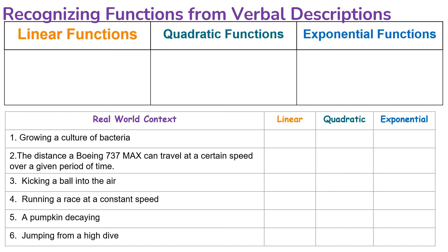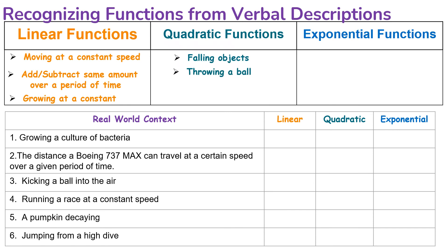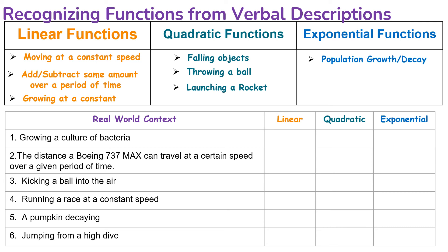Now let's look at recognizing functions from verbal descriptions or real-life situations. A linear function applies when something moves at a constant speed, when you're adding or subtracting the same amount over time, or growing at a constant rate. Quadratic functions arise with falling objects, throwing a ball (which arcs up then falls in a parabola shape), or launching a rocket. Exponential functions model population growth or decay, compound interest, or a depreciating car — situations where you're multiplying or dividing repeatedly.